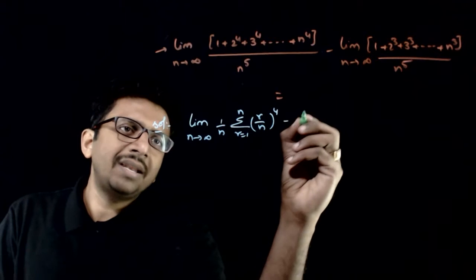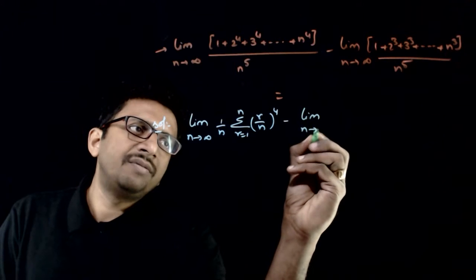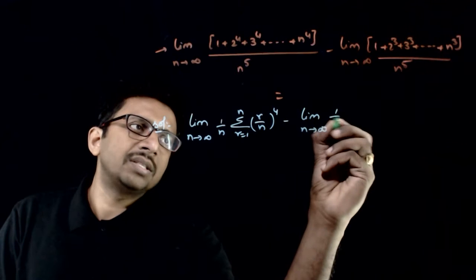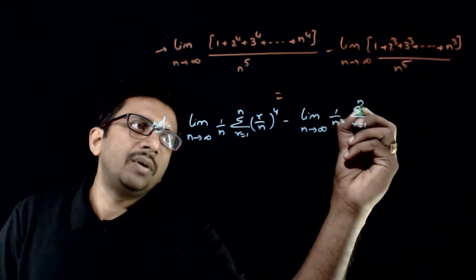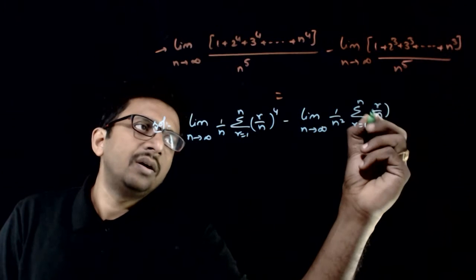minus the limit as n tends to infinity. If you take two n's outside, you get 1/n^2 times sigma r equals 1 to n of (r/n)^3.